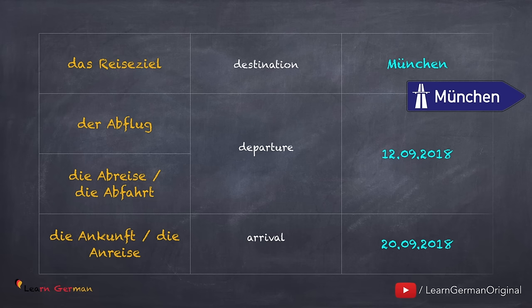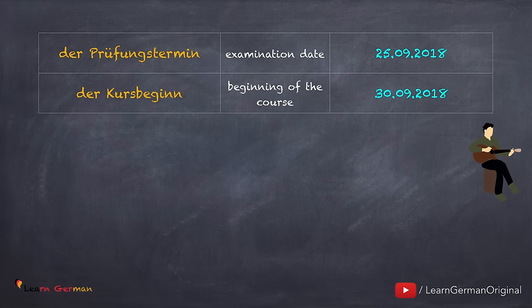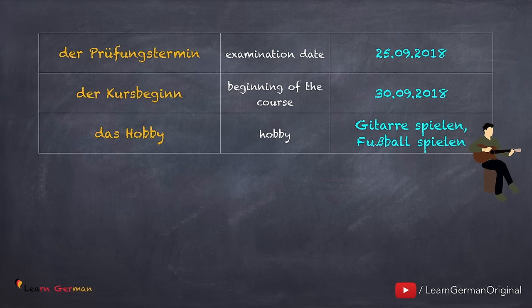You could also be filling a form for the registration of a course or an examination. For example, you should be able to mention der Prüfungstermin — the exam date. When registering for a course, there is der Kursbeginn — the course start date. If you're registering for a club membership, you could be asked for your hobbies — das Hobby — for example Gitarre spielen or Fußball spielen. For a list of hobbies in German, you can check our video on hobbies — the link is below in the description.